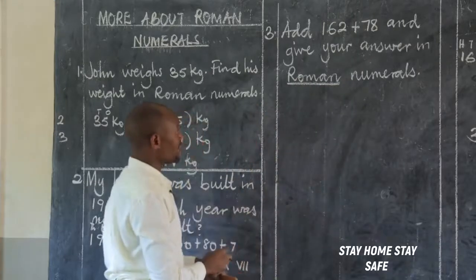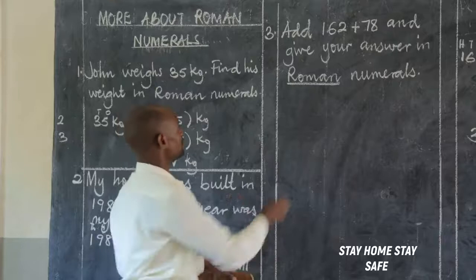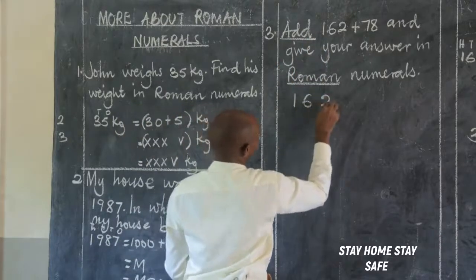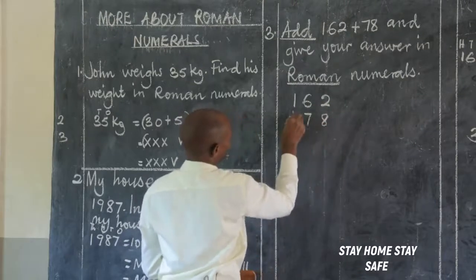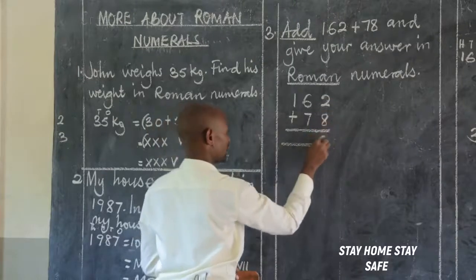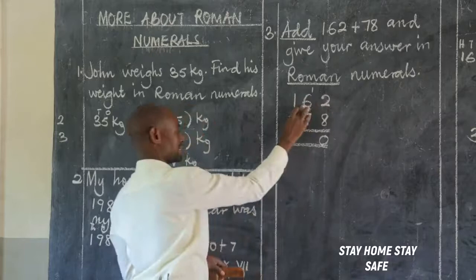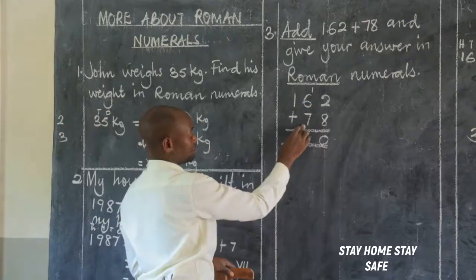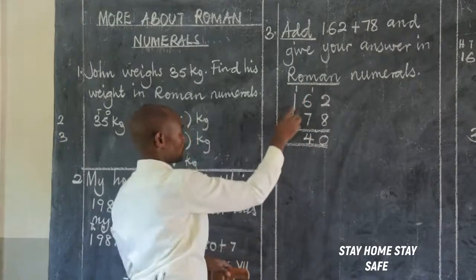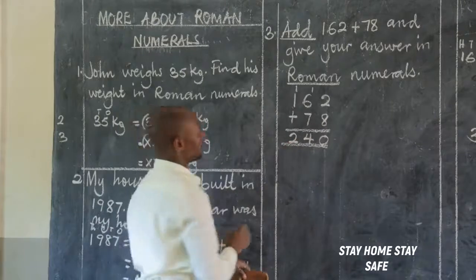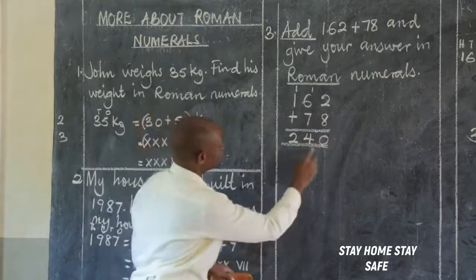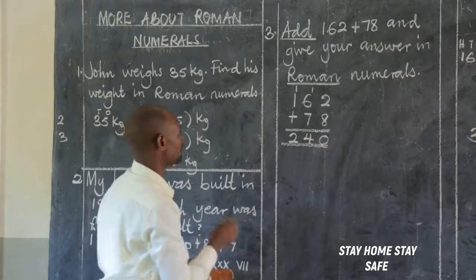What do we do? We need to first add. We are adding 162 plus 78. 2 plus 8 is 10, carry 1. 1 plus 6 plus 7 is 14, carry 1. 1 plus 1 is 2. But they have told you to give your answer in Roman numerals, so this answer should be written in Roman numerals.